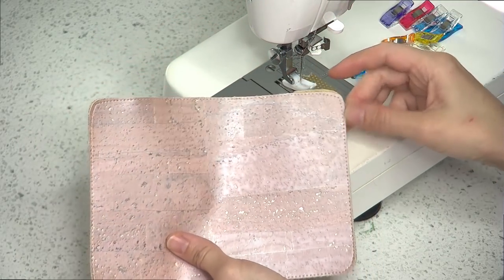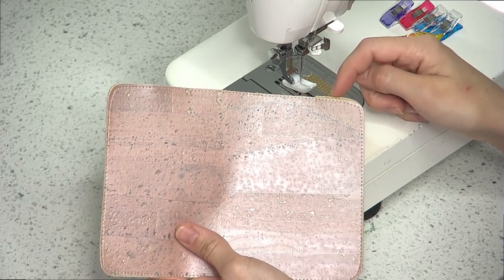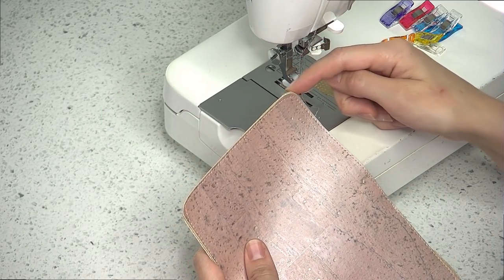When you're done stitching this in place, if you have any overhang of the pocket you can go ahead and trim that even with the main panel, and then you're all finished.